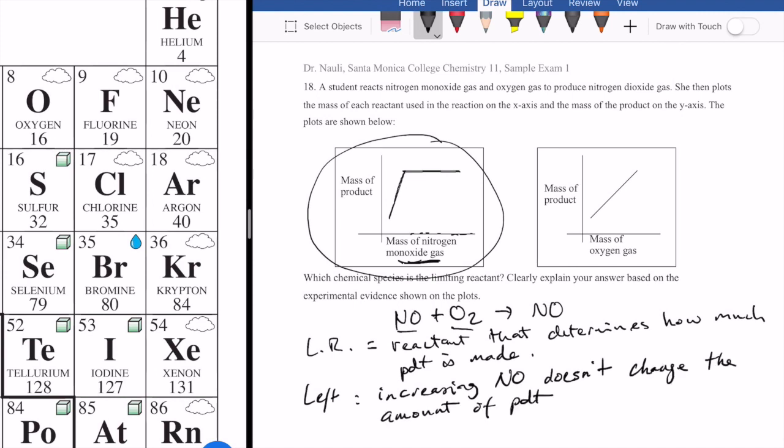Now, if changing the quantity of NO doesn't change the quantity of product you make, then that's not your limiting reactant. Because by definition, the more limiting reactant you have, the more product you should have.